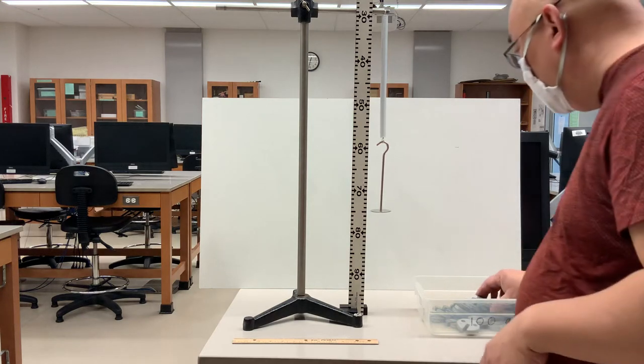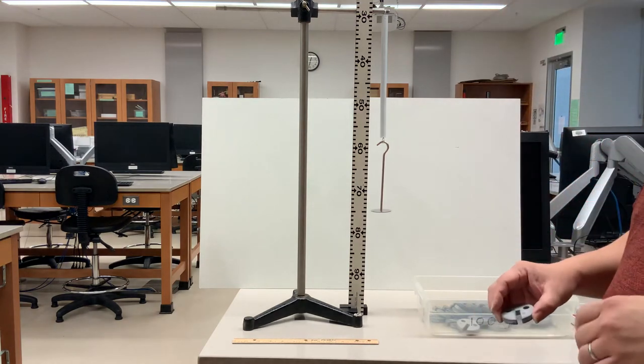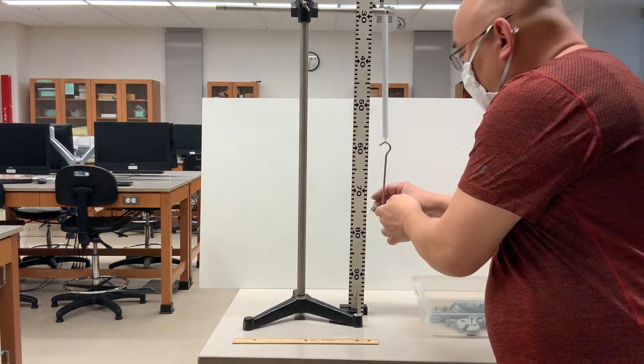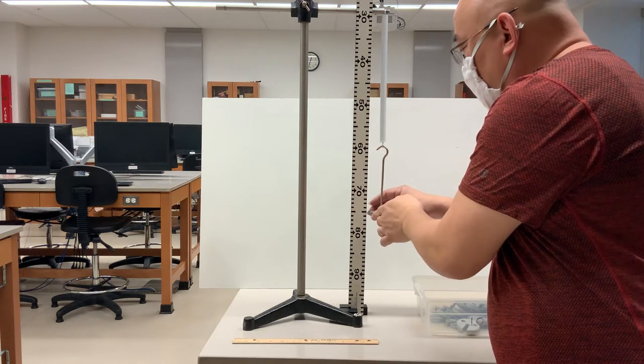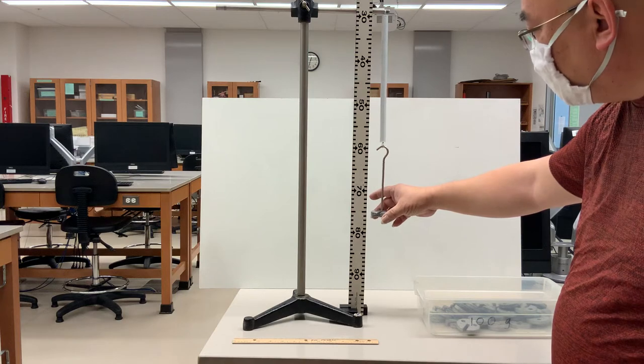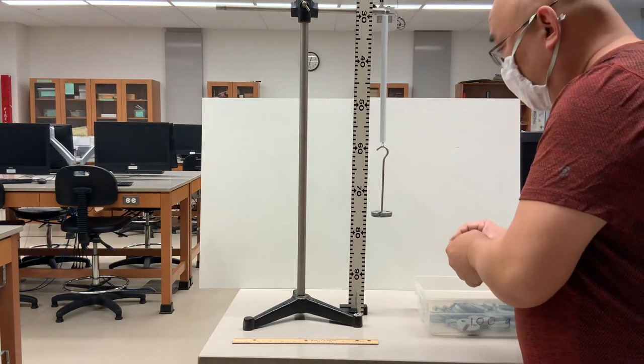So we have 50 grams. The equilibrium position now is 75 centimeters or 0.75 meters. Let me go ahead and put this on here. So the hanging mass now is 150 grams or 0.150 kilograms. You can take your measurements off the video for this if you want to.